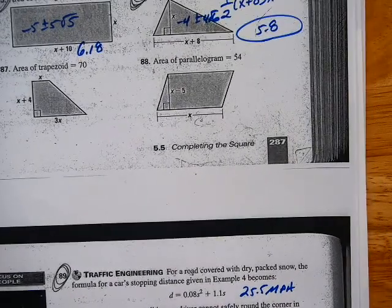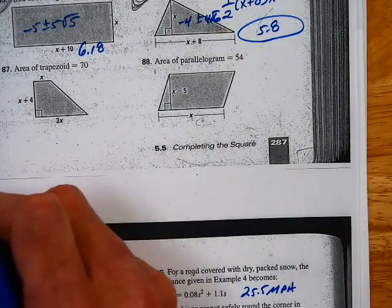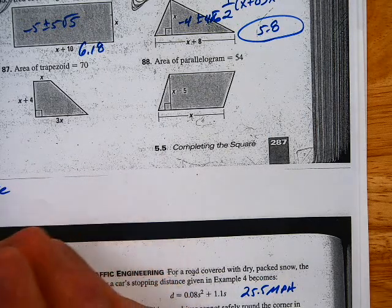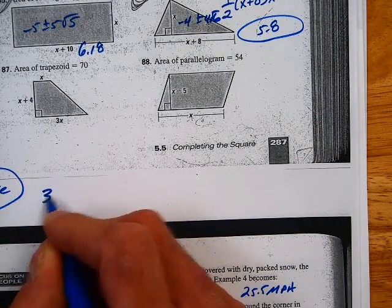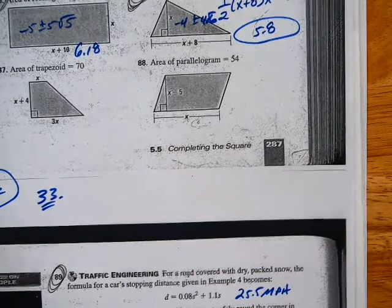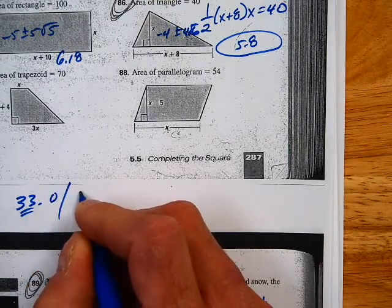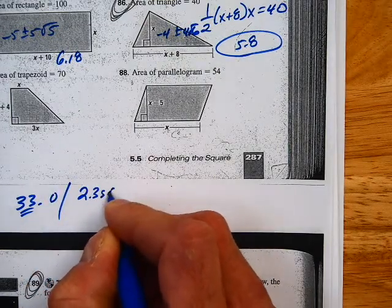20 was 1.77 seconds. 33 is 0 in about 2.3 seconds.